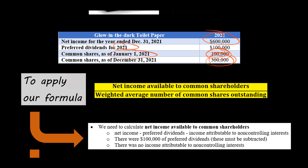Now, if the company had any income attributable to non-controlling interest, we'd need to subtract that as well. But in this example there's no income attributable to non-controlling interest. We'll do an example with that in a moment.